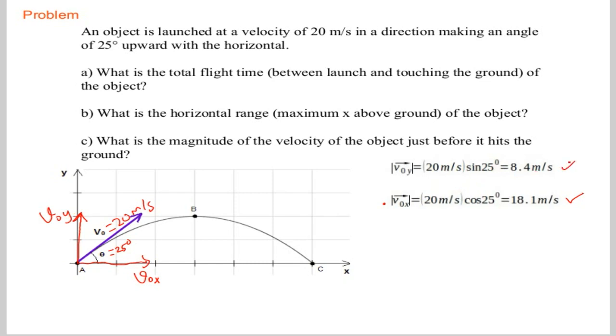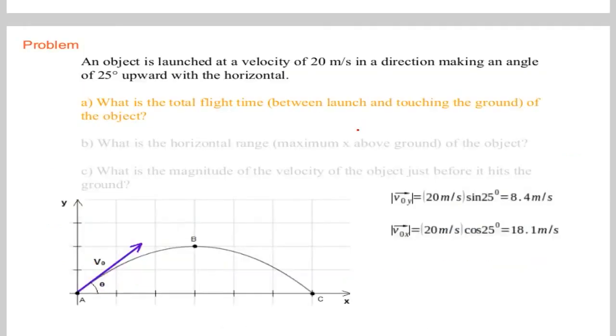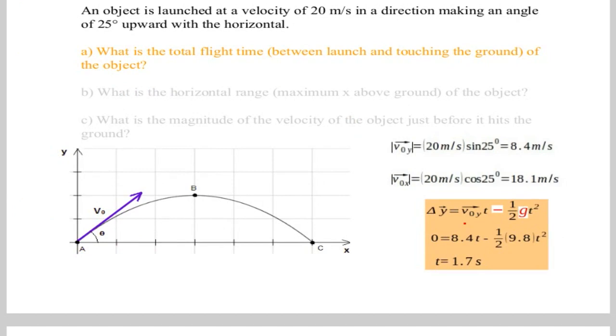Part a says what's the total flight time for this motion. Delta y is the displacement, vertical displacement. When object leaves the ground, goes up, and then when it comes to the same level, displacement is zero. That's why we have zero here. Vertical component is calculated 8.4. Well, we have to also write the direction because of the quantity, and because the direction is upward it is positive 8.4 times t minus 1 over 2, 9.8 t squared. After the calculation, time for the entire motion is 1.7 seconds.